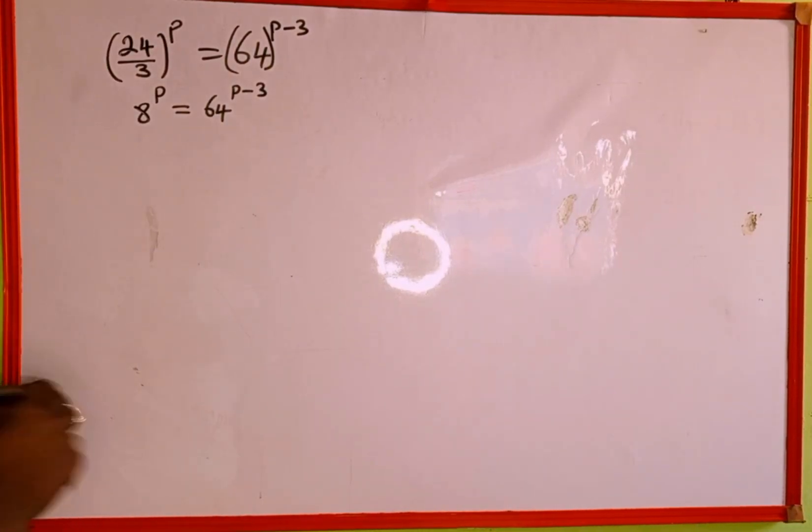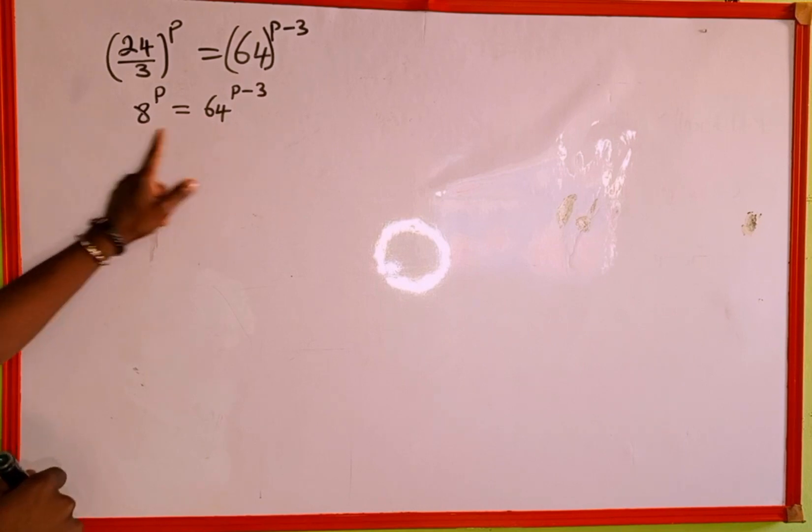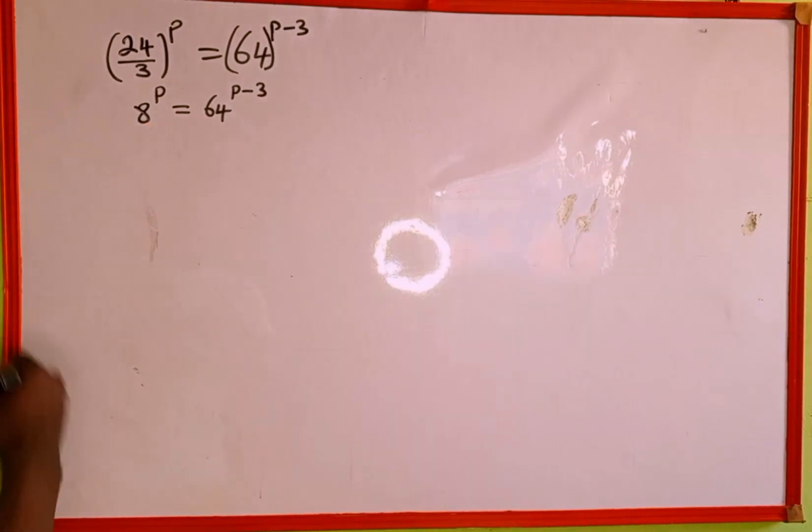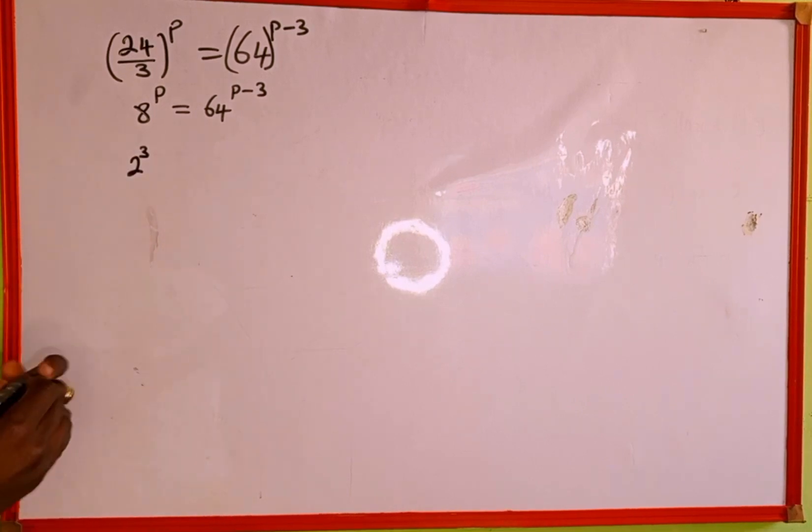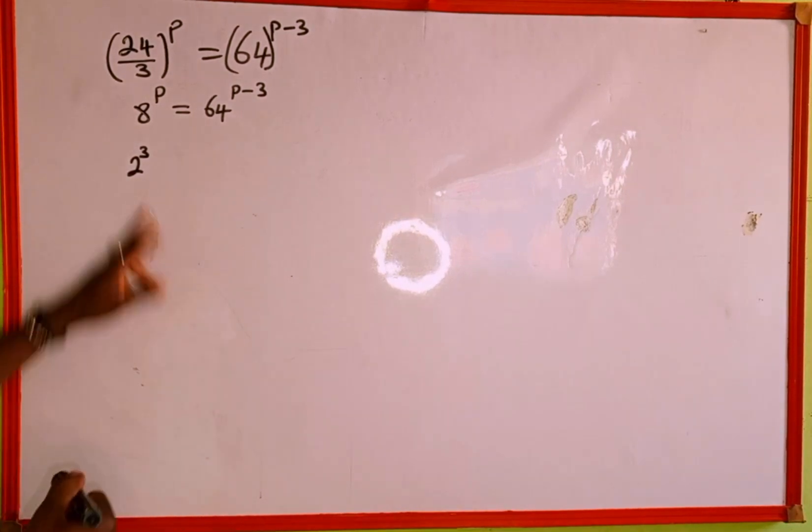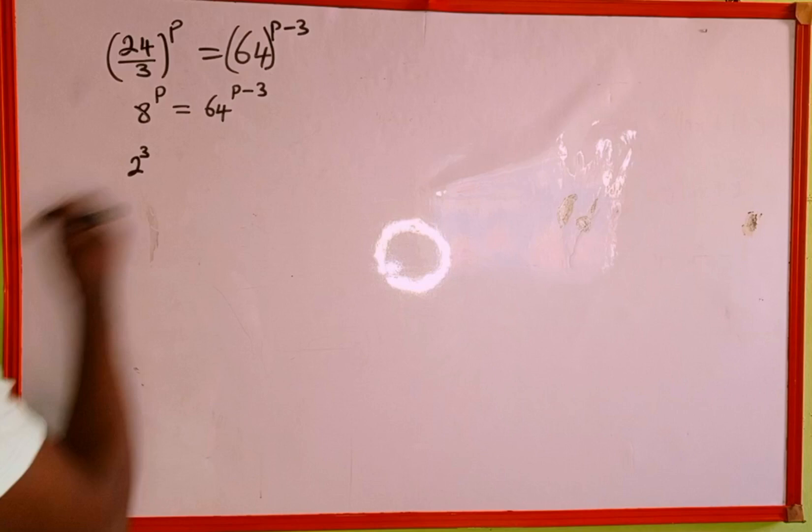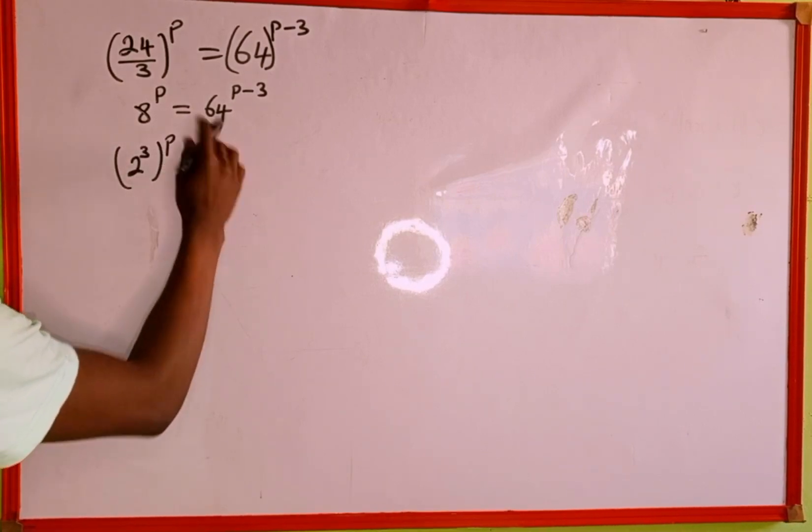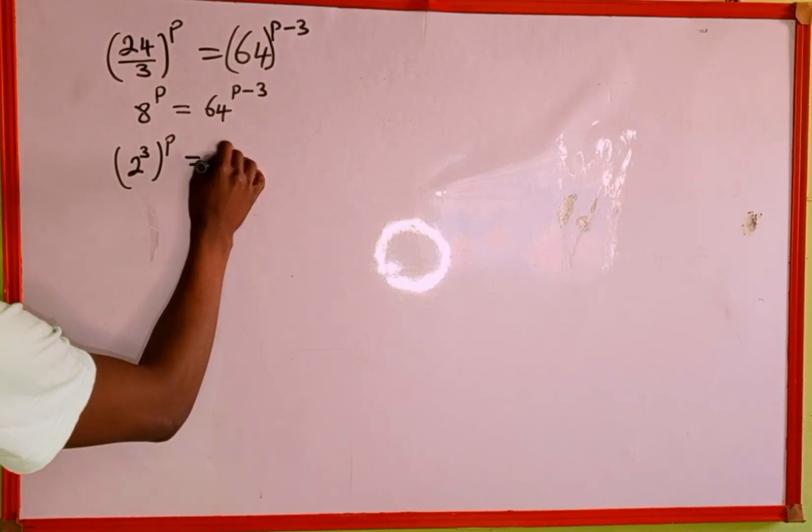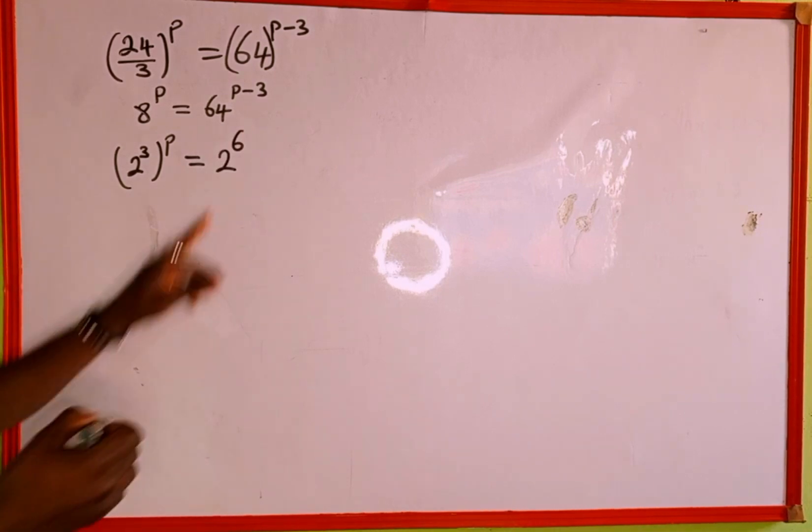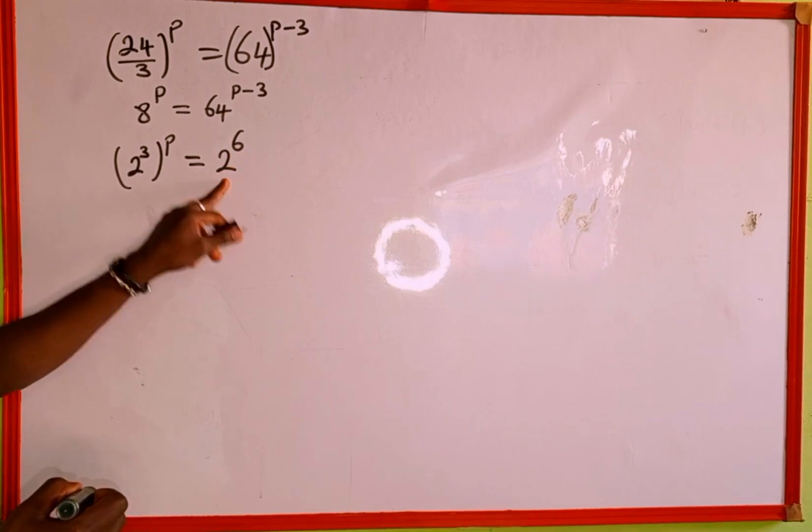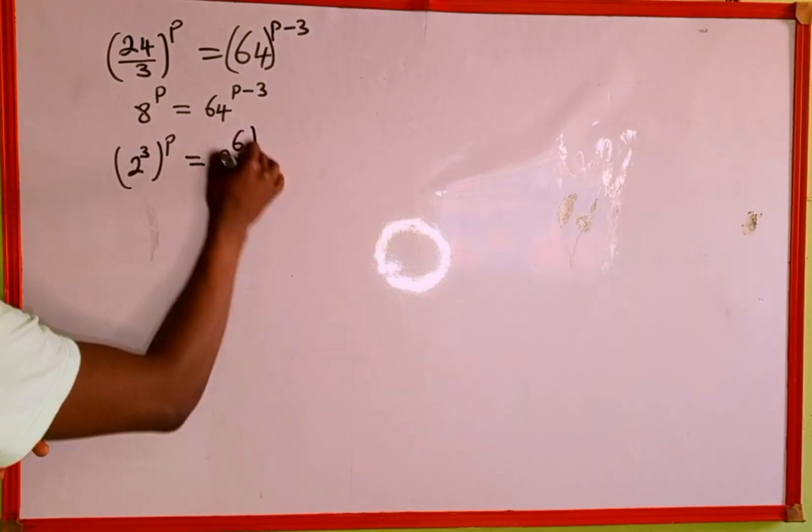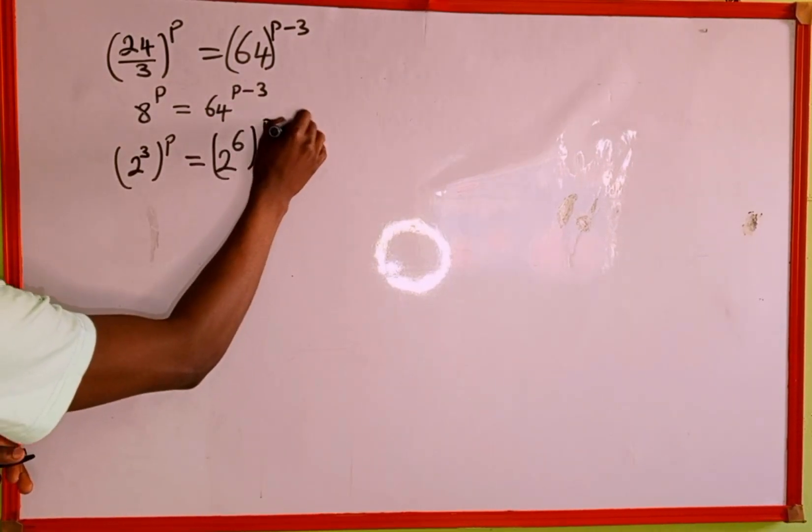The next thing we're going to do is make this base the same. 8 can be written as 2 to the power of 3, because when you multiply 2 by 2 by 2 three times, it gives us 8, all to the power of p. This equals 64, which is the same as 2 to the power of 6, when you multiply 2 by 2 six times to get 64, all to the power of p minus 3.